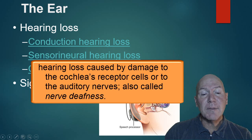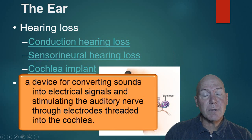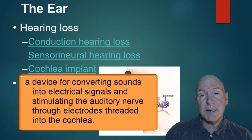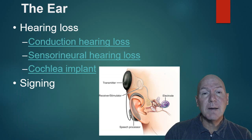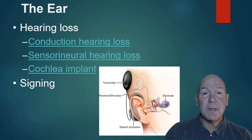Cochlear implants are used for sensory-neural hearing loss. Many people in the deaf culture are against cochlear implants because they feel it implies something is wrong with them, and it is an invasive surgery. The age at which you get a cochlear implant also matters a great deal — if you get it later in life, many people are very dissatisfied. They never learn to talk like a speaking person and they don't hear sounds quite the same way. The younger you get it, the better.